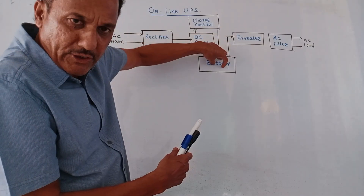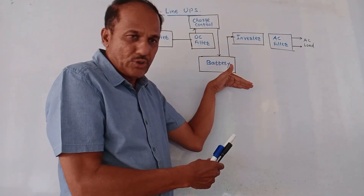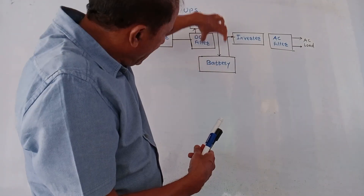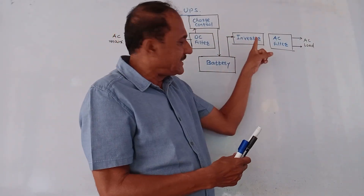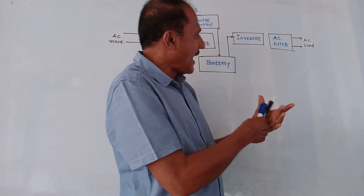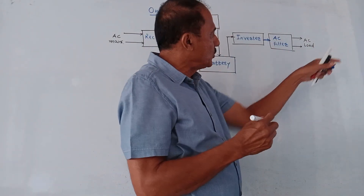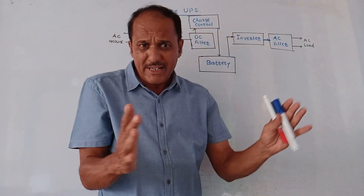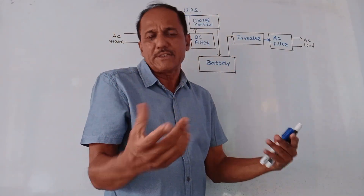At the same time, while the battery is charging, the output of the battery is given to the inverter — to convert the DC signal back into AC. The output of the inverter is applied to the AC mains and then given to the AC load. This is the normal mode of operation, where the mains is always connected and charging also takes place in parallel.